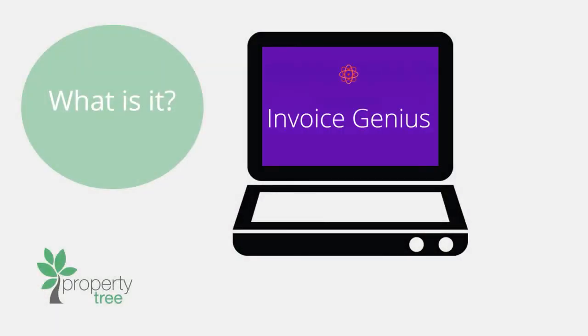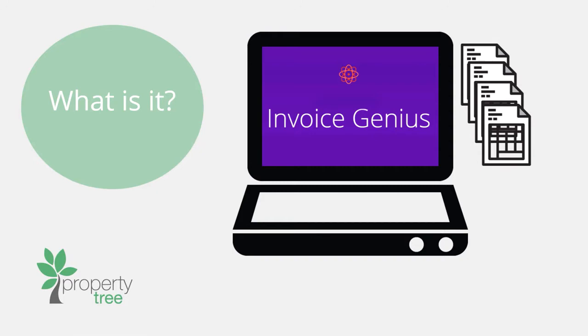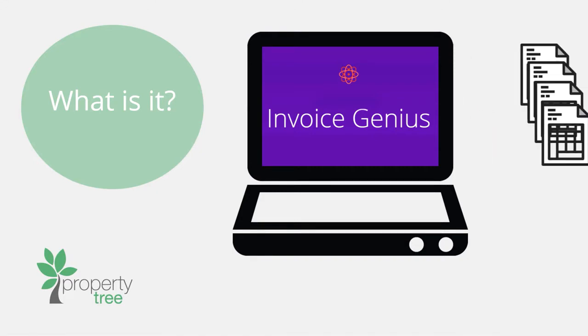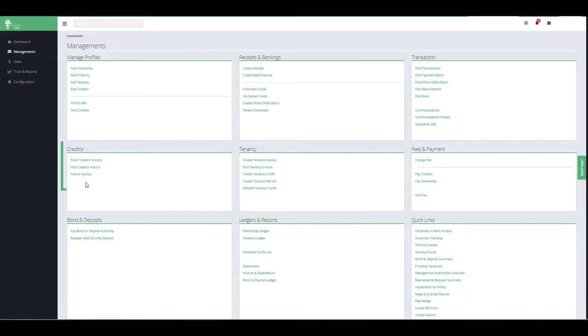PropertyTree's Invoice Genius allows you to upload and process multiple invoices at once. First, scan or save your barcoded and QR-coded invoices onto your PC. Then launch Invoice Genius straight from PropertyTree.